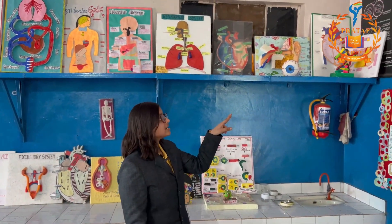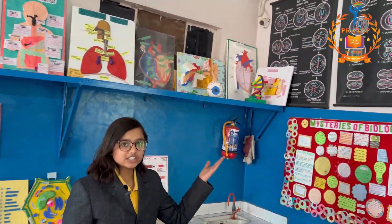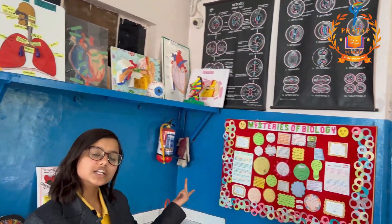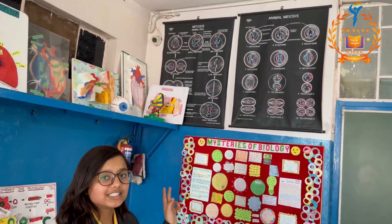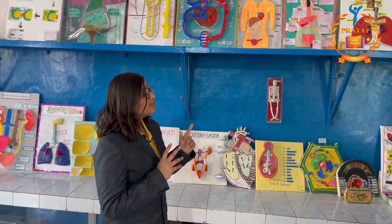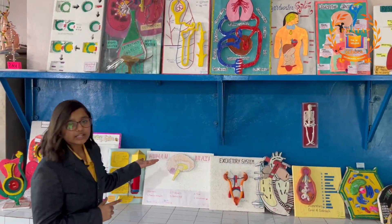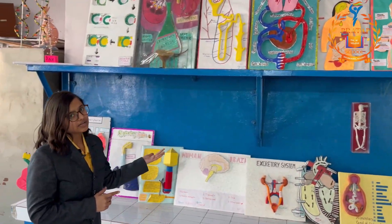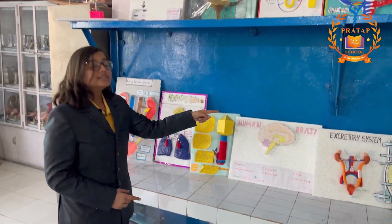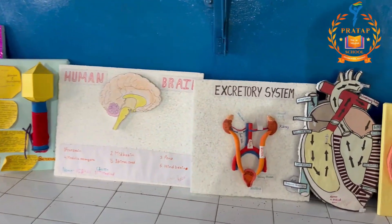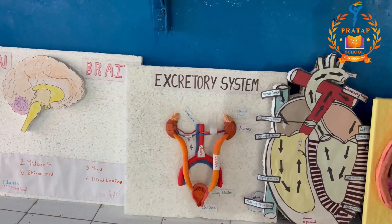Hence, various charts are hung around the lab for better understanding. Like these two charts display pictorial representation of meiotic and mitotic division in animal cells. There are also various models prepared by students themselves placed around the lab, both working and non-working. For example, this is the non-working model of the excretory system, and that is the working model of the excretory system.